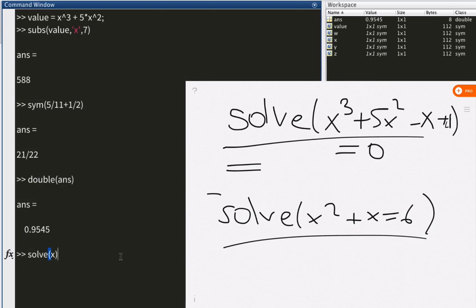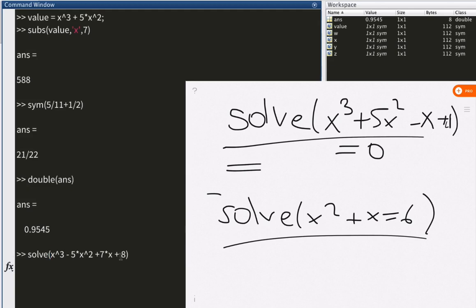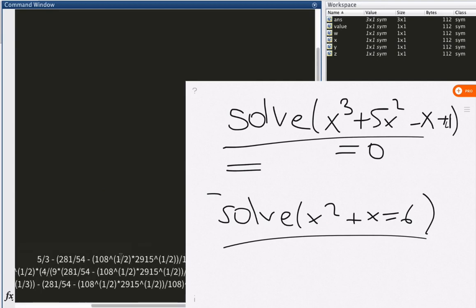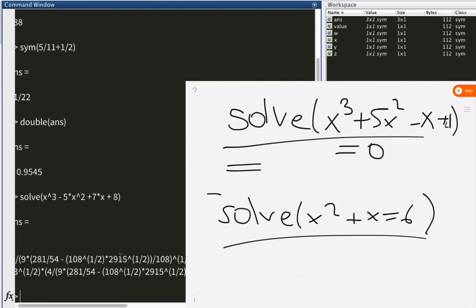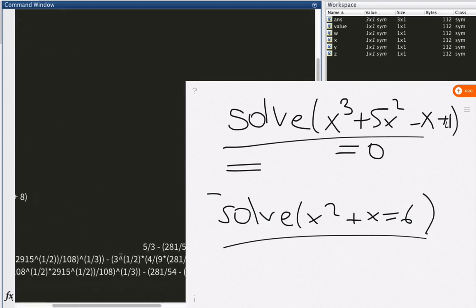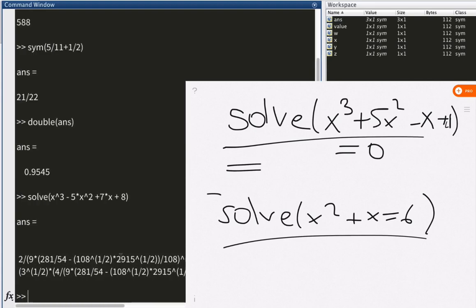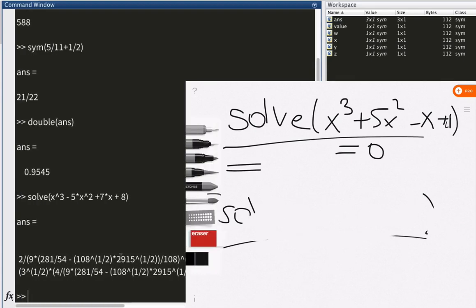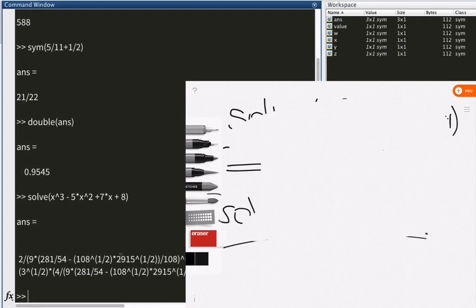So, I'm going to type something crazy here. So, I'm not even sure if there's a real solution to it. Solve x cubed minus 5x squared plus 7x plus 8. So, let's see. It's busy. Oh my god. Look at this answer. Woo! Oh, that's crazy. I don't know what this means, but again, solve the question. That's what we're really concerned about.